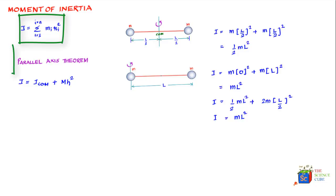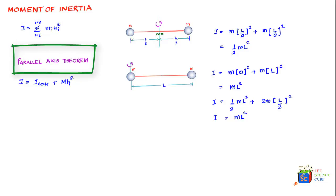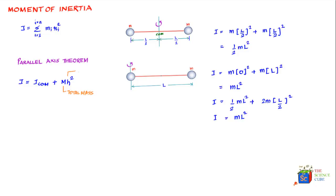To clarify the notation: M is the total mass of the system, and h is the perpendicular distance of the new axis from the center of mass.